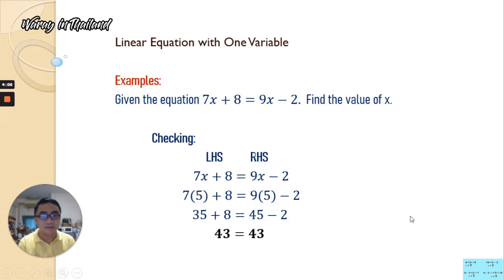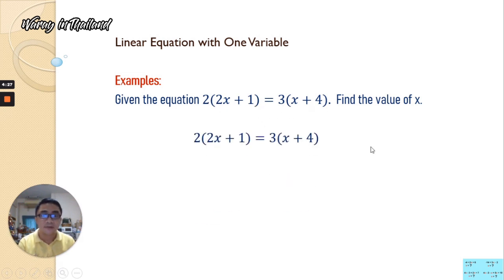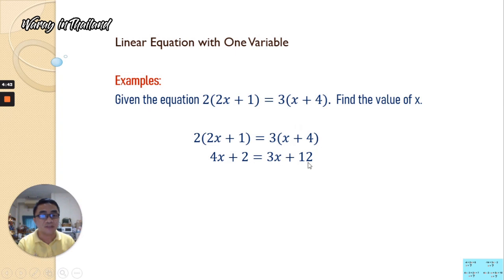Now we continue with the next example. Given the equation 2 times (2x plus 1) is equal to 3 times (x plus 4). Find the value of x. Since we need to distribute the outside term to the inside terms, we distribute first: 2 times 2x is 4x, 2 times 1 is 2; and 3 times x is 3x, 3 times 4 is 12.